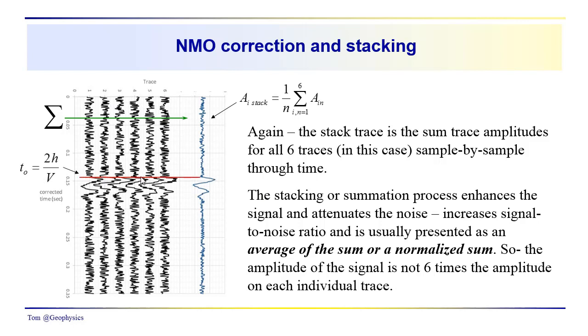We'll emphasize that when the traces in the gather are NMO-corrected, they all come in at the same time. If the velocity was good, if your correction was good, then the arrival times for all the events for each trace in the common midpoint gather should be about the same, and that carries through to the stack trace as well.